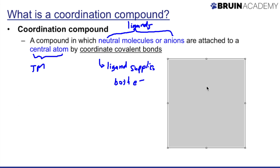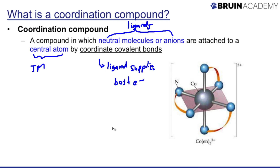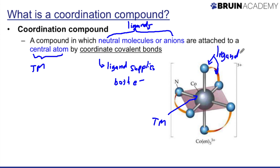An example of a coordination compound is shown here. The central element is cobalt, a transition metal — that's your TM, your central atom. All the groups around it are your ligands. There are a total of six ligands, creating an octahedral shape. The overall charge of the coordination compound is plus three.